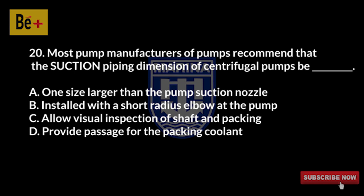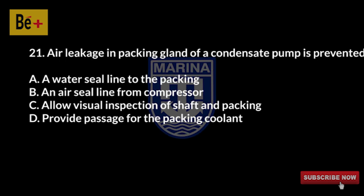Most pump manufacturers recommend that the suction piping dimension of centrifugal pumps be: A) one size larger than the pump suction nozzle, B) installed with a short radius elbow at the pump, C) allow visual inspection of shaft and packing, D) provide passage for the packing coolant. The answer is A, one size larger than the pump suction nozzle.